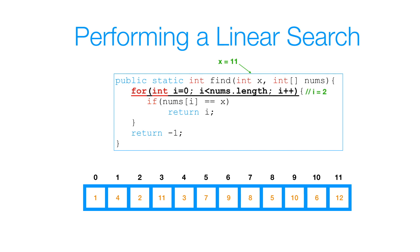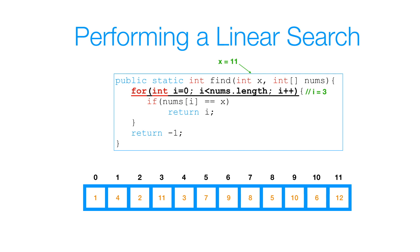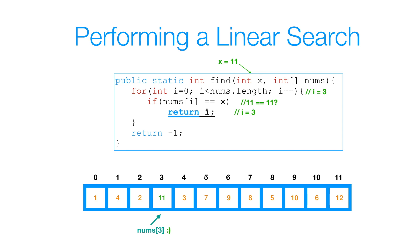At this point i is equal to 2. Is nums of 2 equal to 11? Well, nums of 2 is 2, and 2 is not equal to 11. So we proceed with our for loop. Now i is equal to 3. Is nums of 3 equal to 11? Yes, nums of 3 is 11. So we simply return 3, and we're done. We've successfully performed a linear search.